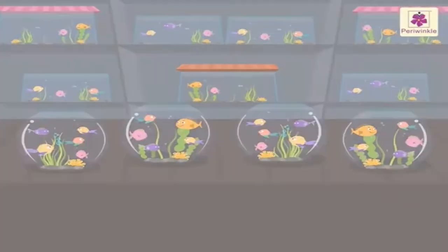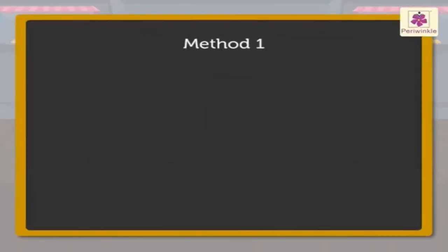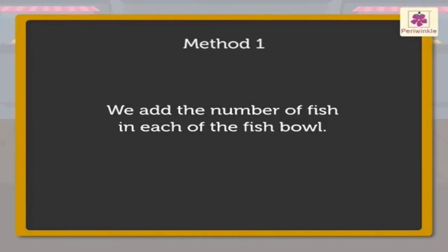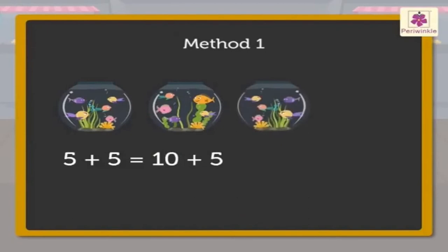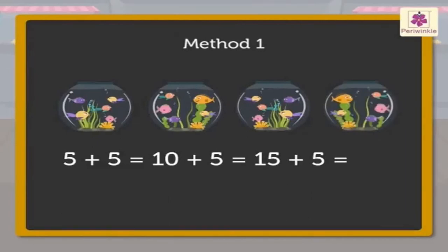There are 2 methods to find the number of fish in all. So let us start. Method 1. Here, we add the number of fish in each of the fish bowls. Let us do it. 5 plus 5 is equal to 10. Now, 10 plus 5 is equal to 15. And 15 plus 5 is equal to 20. So, there are 20 fish in all.